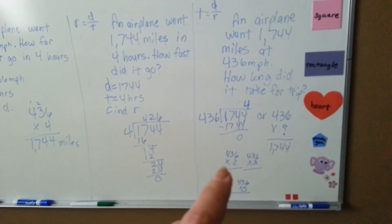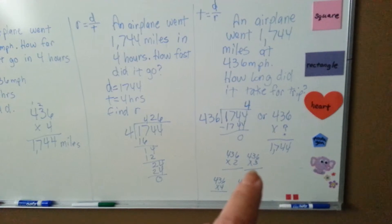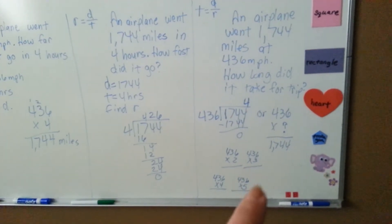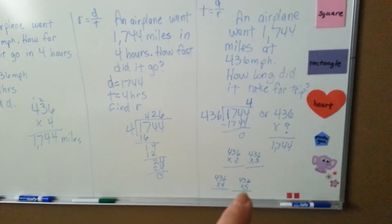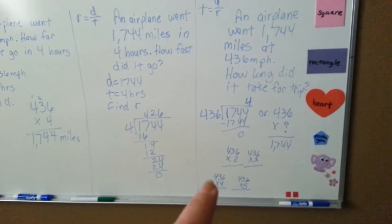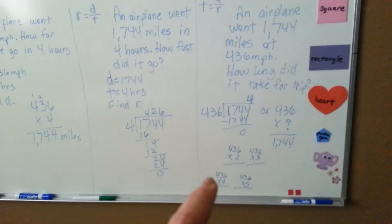So multiply 436 by 2, that's too small. 436 by 3, that's still too small. By 5, that would be too big. So it must be by 4.